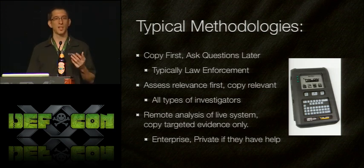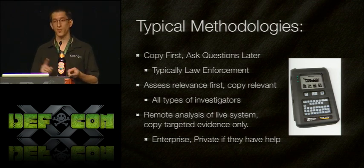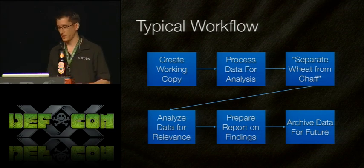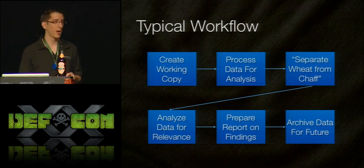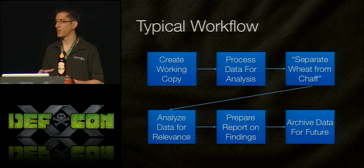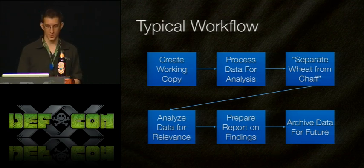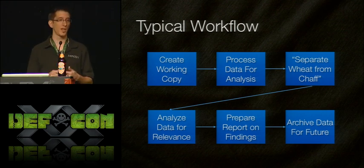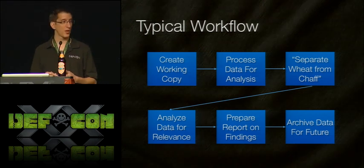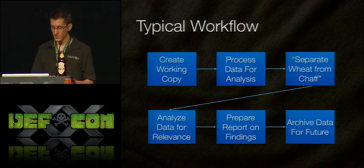Regardless of which type of forensic lab you're running — law enforcement, private consultancy, or enterprise — you're going to do essentially the same workflow. There are six stages all forensic investigators run through. Number one is creating a working copy: either imaging a file or creating a forensic container with digital hashes to preserve the evidence as it existed on the target system. Once preserved, you can process it for analysis.